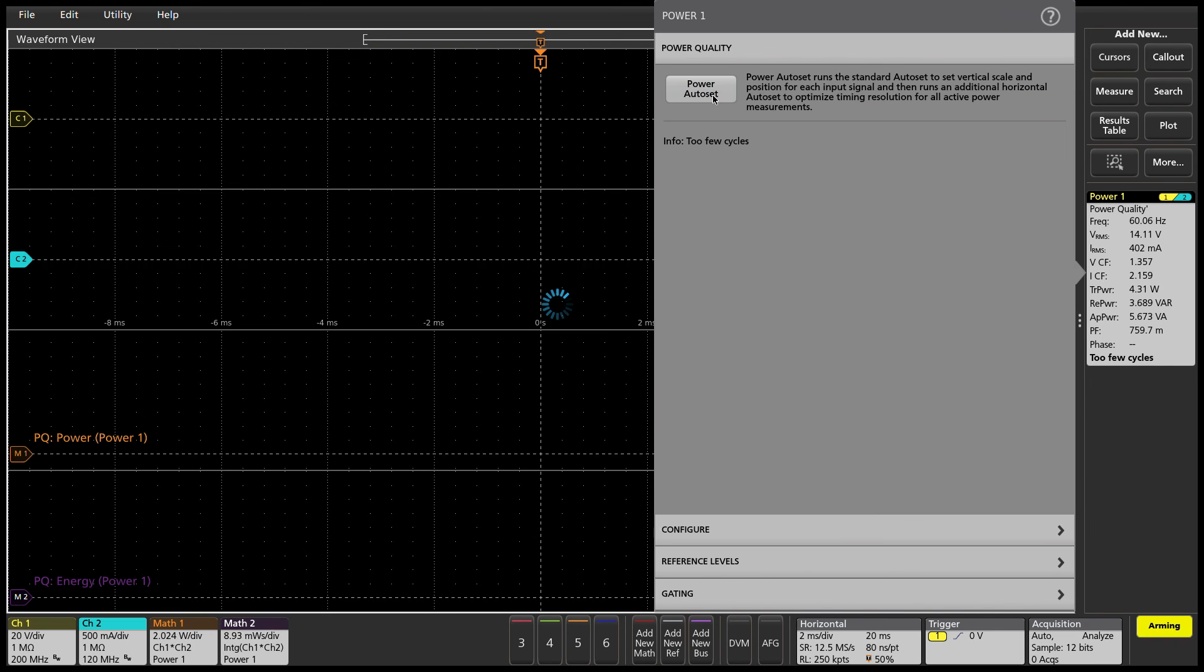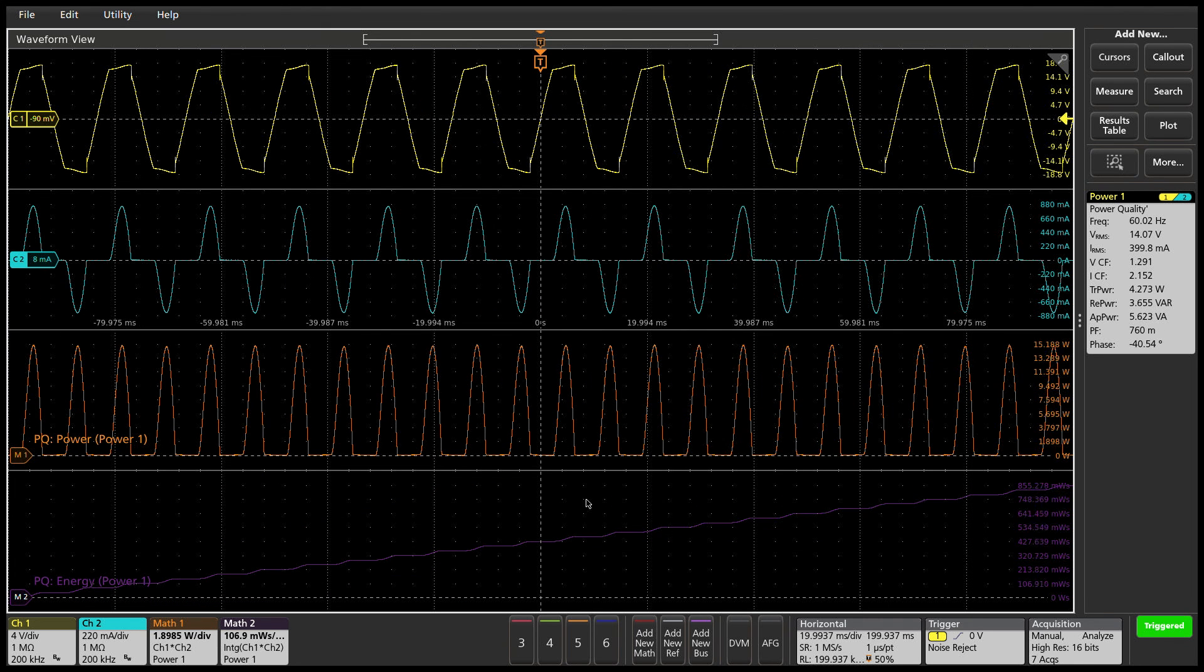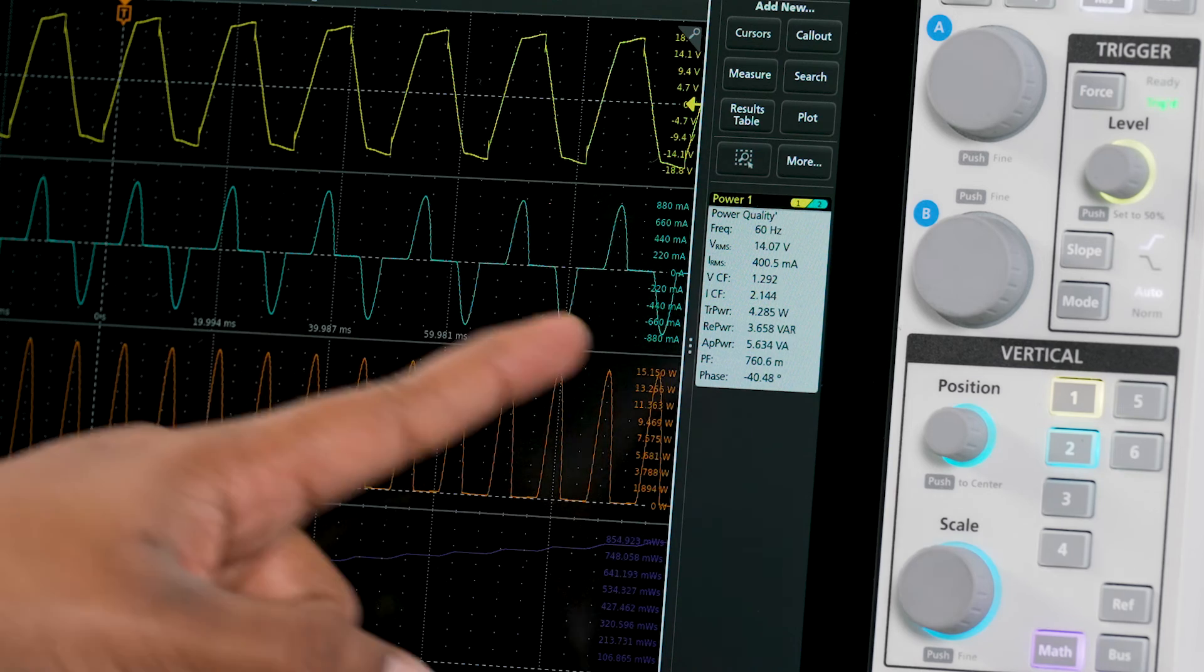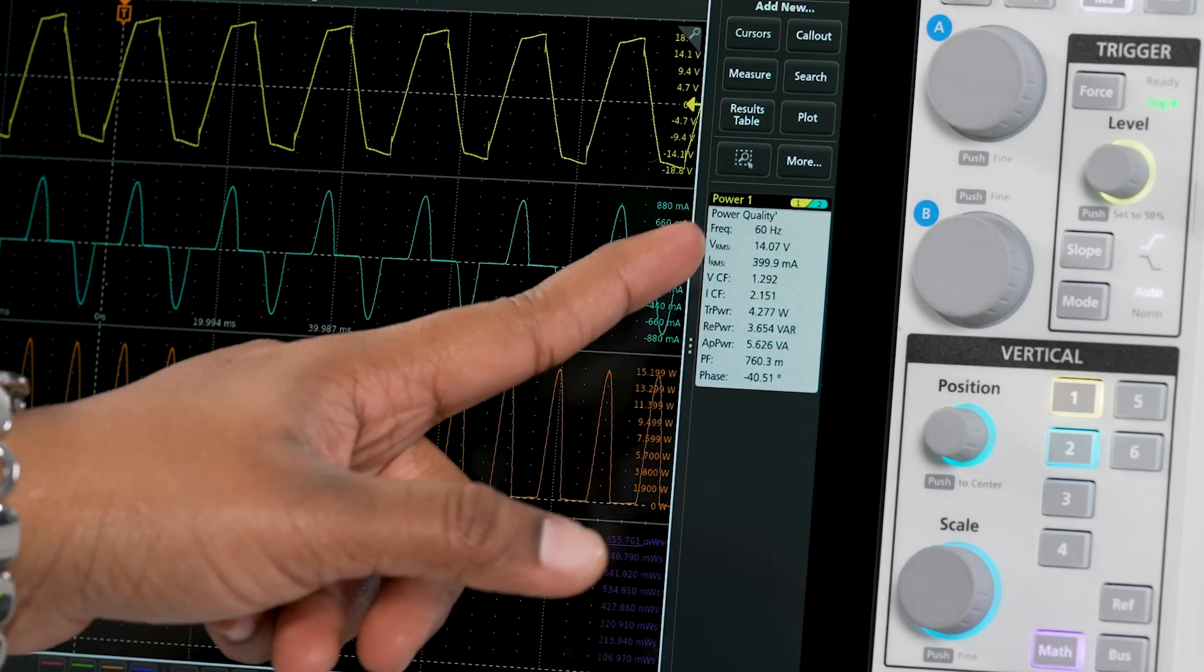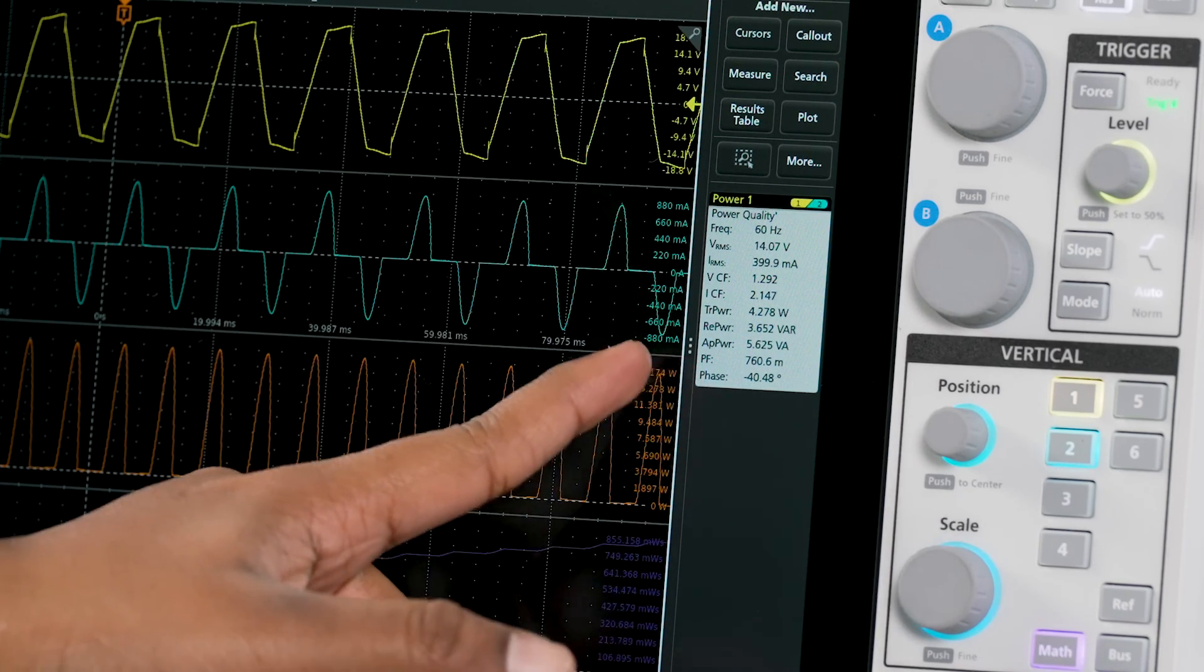Power auto set automatically sets up the oscilloscope acquisition system for optimal measurement results for all selected power measurements. The power quality measurements are optimized for line frequencies and are commonly performed at the AC line input of the power supply.